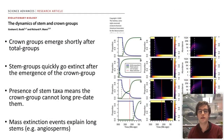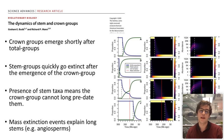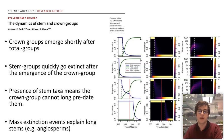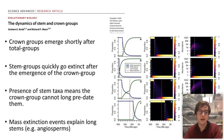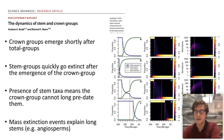This paper came out earlier this year and has two main findings: that crown groups emerge shortly after total groups, and that stem groups go extinct quickly after the emergence of the crown group. This has important implications because it means that where we see stem group fossils, the crown group shouldn't be too far in the past. When stems are demonstrably long, as in the case of angiosperms, they say this must be caused by mass extinction events.